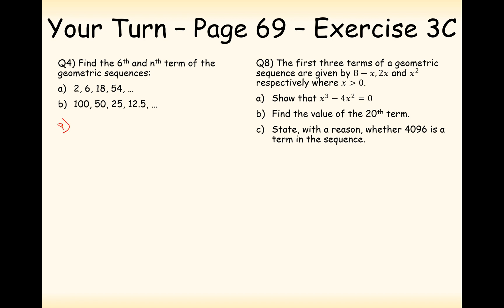Part a is starting at 2 and has a common ratio of 3 each time. The sixth term is calculated by 2 times 3 to the power of 5 — remember it's always 1 power less than the term you're at — so 2 times 3 to the power of 5. Computing this gives 486. And the nth term is just 2 times 3 to the power of n minus 1.